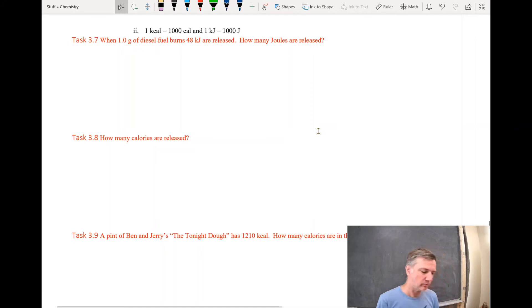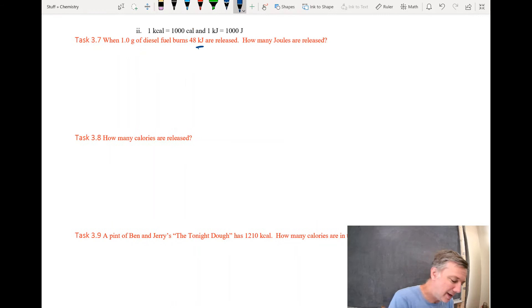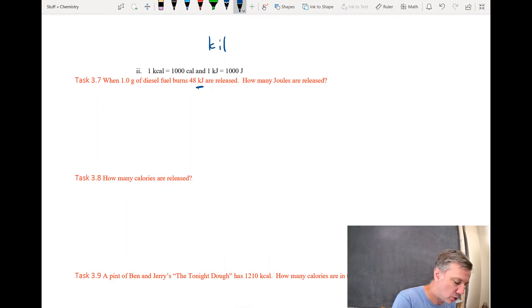This says, when one gram of diesel fuel burns, 48 kilojoules are released. So that now is a kilojoule. And as it turns out, for every one kilo, there's 1,000. So there's 1,000 joules in one kilojoule. So 48 kilojoules are released.